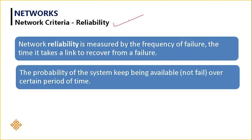Next is reliability - very important. Network reliability is measured by the frequency of failure and the time it takes a link to recover from failure. We normally think reliability means the system should work 24/7, but reliability is not just about the system not failing. Once the system does fail, how much time does it take to recover back? That is what we measure as reliability. The recovery time should be very less. It is also about the probability of the system remaining available over a certain period of time.